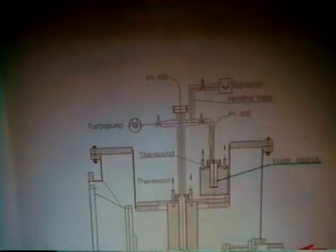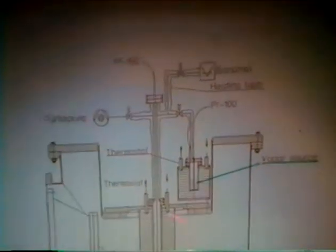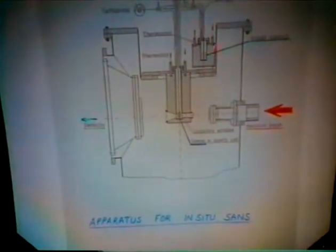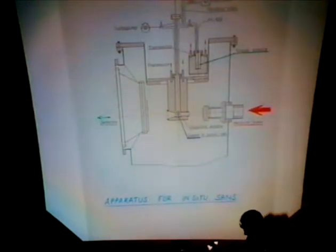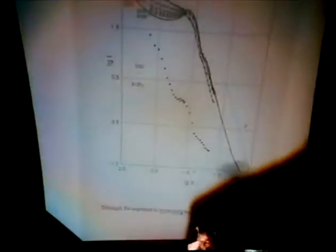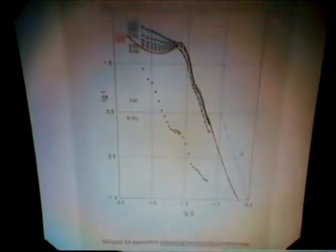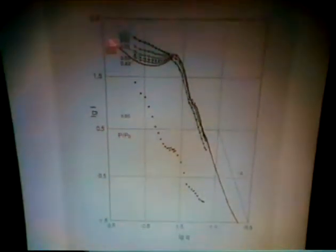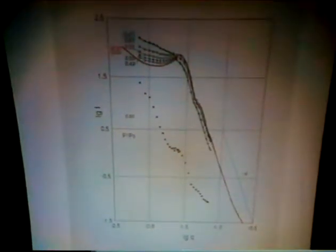The sample is in here, the beam comes through, this is the thermostat for the sample, there is a vapour source here, the detector is out here, and one can change the distance between the detector and the sample depending on the range of Q one wants to examine. I'll show some results for adsorption at different P/P₀ values. This red line is the scattering curve — log Q versus log I — and this is the scattering curve of the outgassed silica.